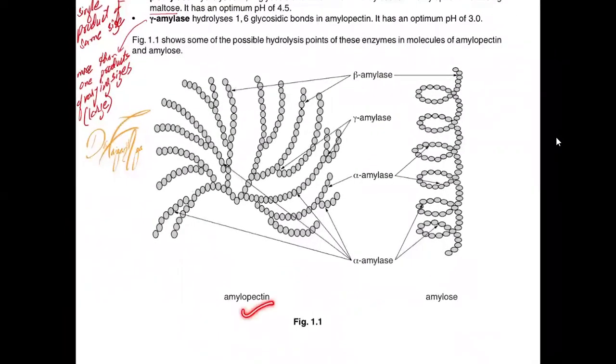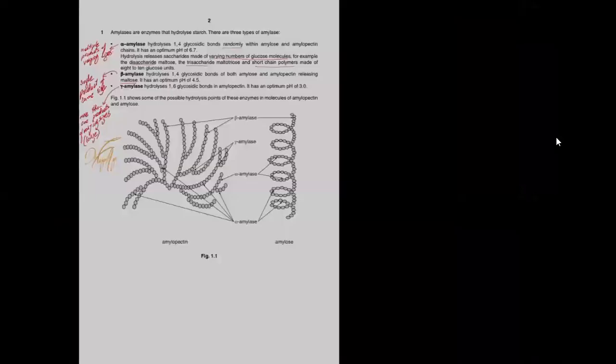This is the amylopectin chain shown to you, amylose shown to you, the precise location where the beta amylase and the gamma amylase or alpha amylase connect is provided to you. So what do we do?